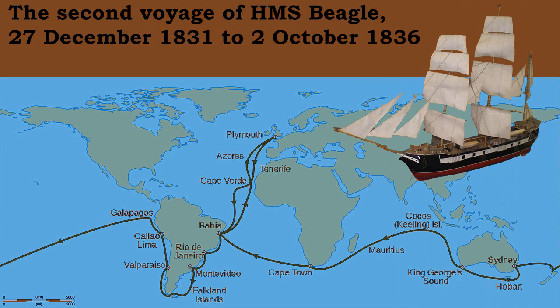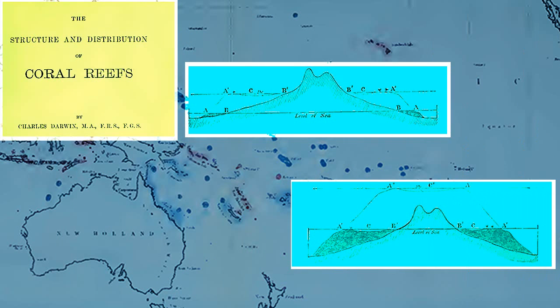Darwin's voyage around South America had given him ample time to view the effects of the historic intermittent elevation of land and its effect on the deposition and removal of sediment. He then imagined subsidence in place of elevation, and he had a hypothesis for the creation of Ring Atolls and barrier reefs. When he later observed the coral Ring Atolls firsthand, he was able to confirm, in his mind, that his hypothesis was correct.